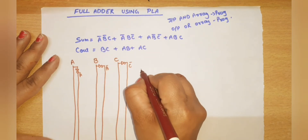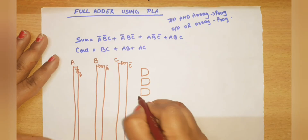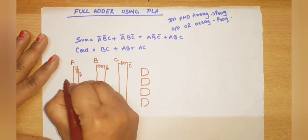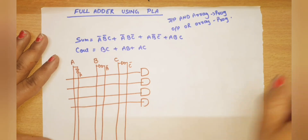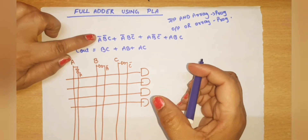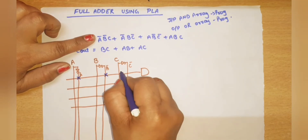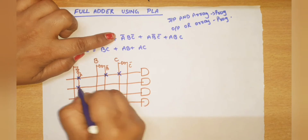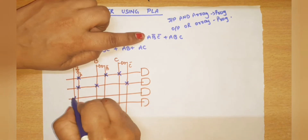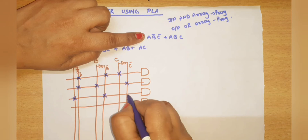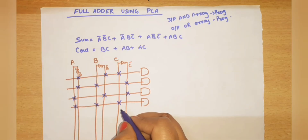For Sum, how many AND gates are needed? Four AND gates. First AND gate inputs: A-bar, B-bar, C. Second AND gate inputs: A-bar, B, C-bar. Third AND gate inputs: A, B-bar, C-bar. Fourth (last) AND gate inputs: A, B, C. These four product terms feed into the OR gate for Sum output.